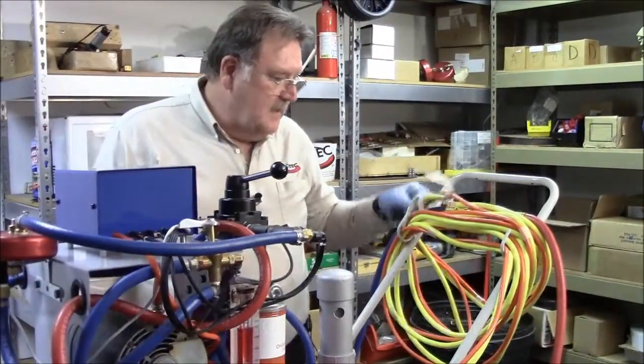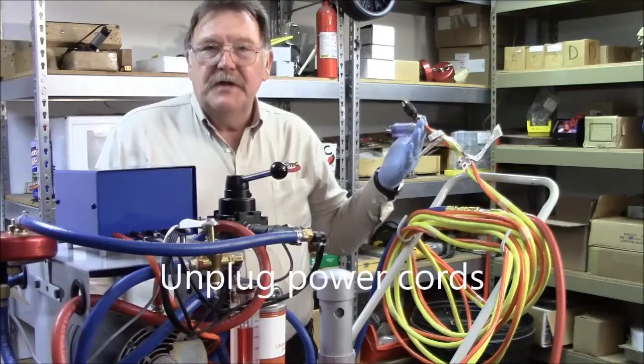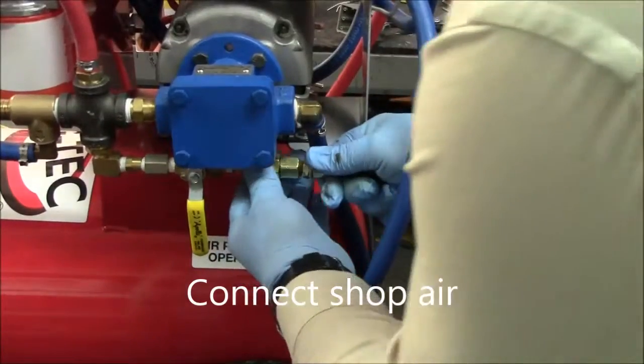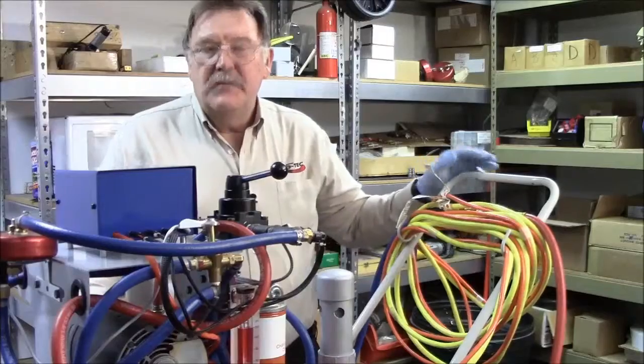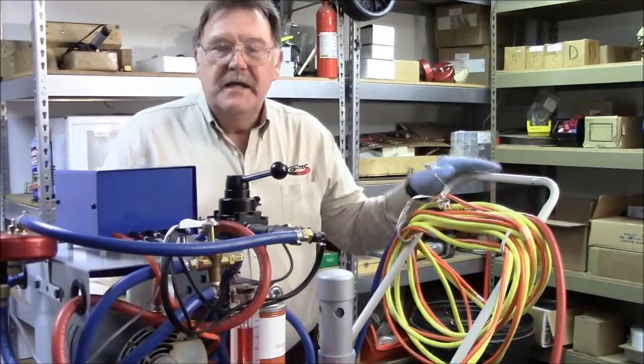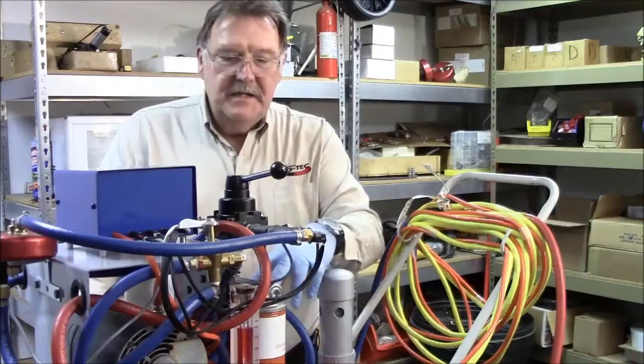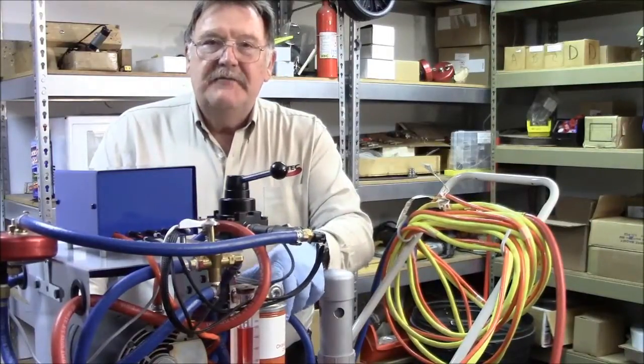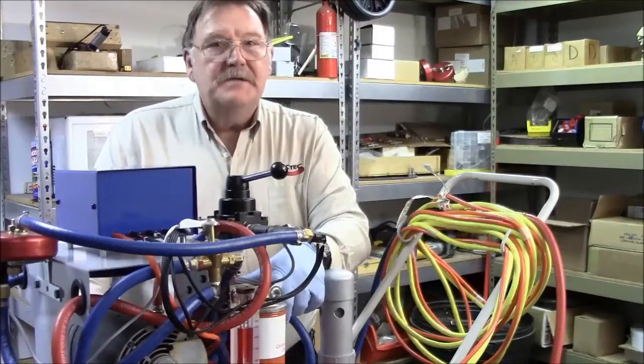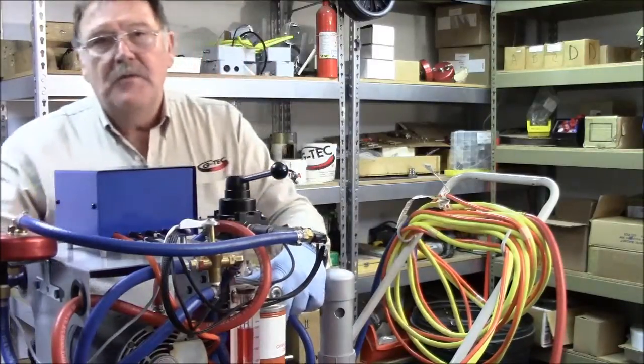If you'll notice we've got the flusher unplugged but we've hooked up the air and what we're going to do is run air through the system. The reason we're going to do that is to get the oil, the ATF, out of the filter so you don't make a mess when you take them off and out of the Oberg filter.